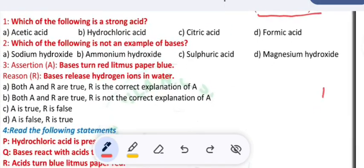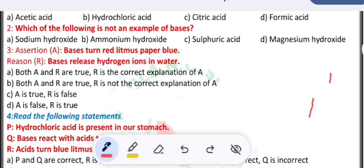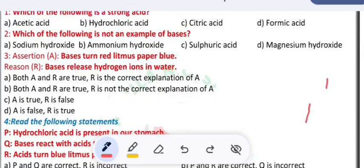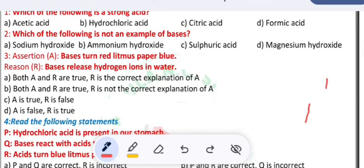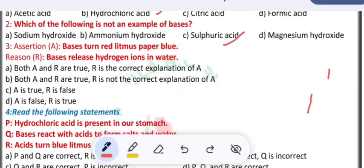First question: which of the following is a strong acid? A) acetic acid, B) hydrochloric acid, C) citric acid, D) formic acid. Which of the following is not an example of bases? A) sodium hydroxide, B) ammonium hydroxide, C) sulfuric acid, D) magnesium hydroxide. Here hydrochloric acid is a strong acid and sulfuric acid is an acid but not a base.